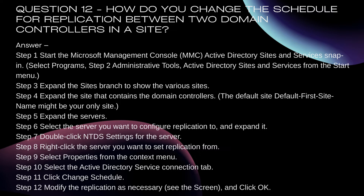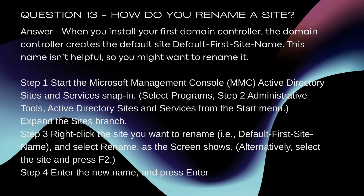Step 9: Select Properties from the context menu. Step 10: Select the Active Directory Service Connection tab. Step 11: Click Change Schedule. Step 12: Modify the replication as necessary and click OK. Question 13: How do you rename a site? When you install your first domain controller, the domain controller creates the default site 'Default-First-Site-Name'.